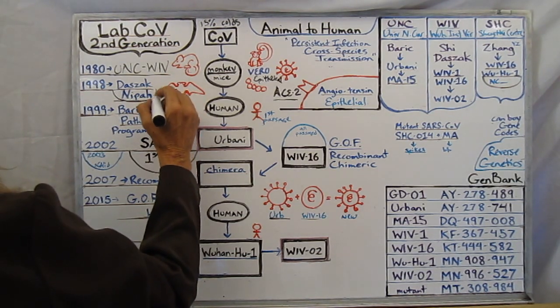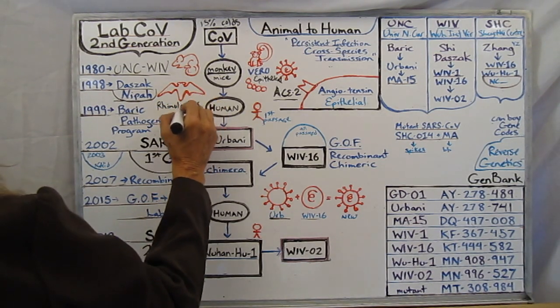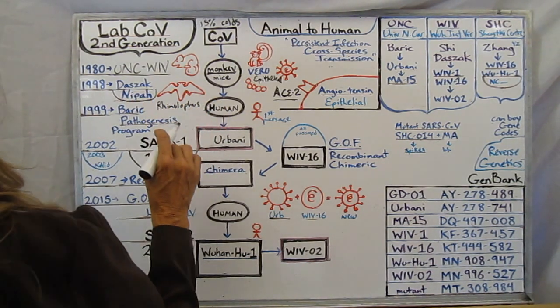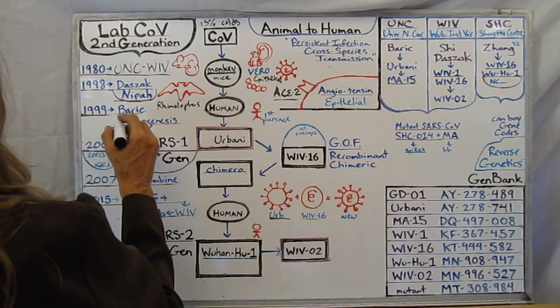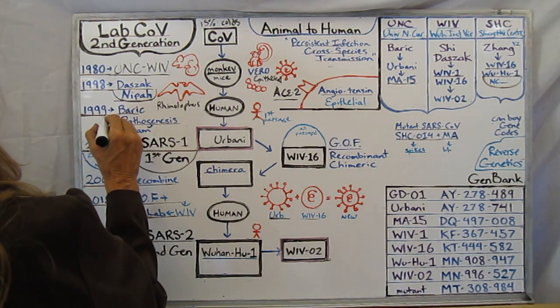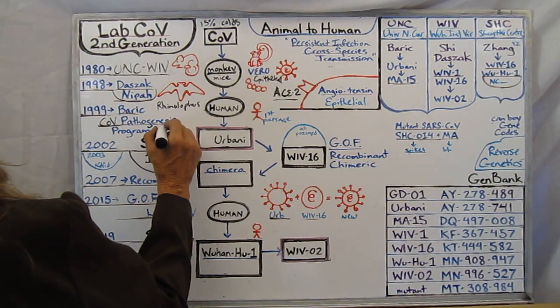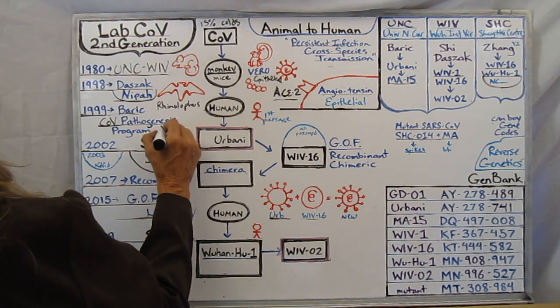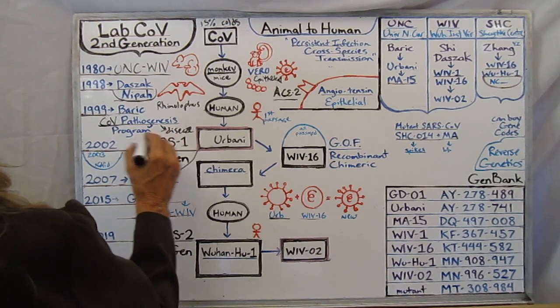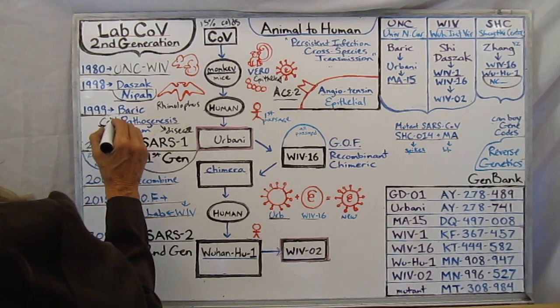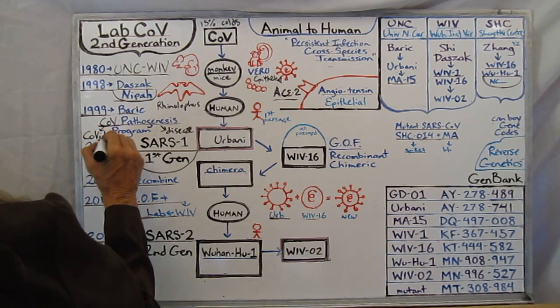In 1997 the rhinolophus bat which is the source of this virus had all its caves mapped in China. And now Barrick is teaching out of the University of North Carolina a coronavirus pathogenesis program. That means to cause disease pathogenesis and he has graduates that are basically learning how to turn CoV into COVID infectious disease.